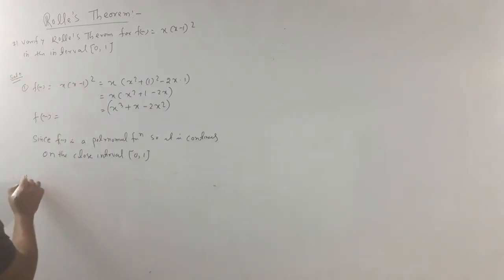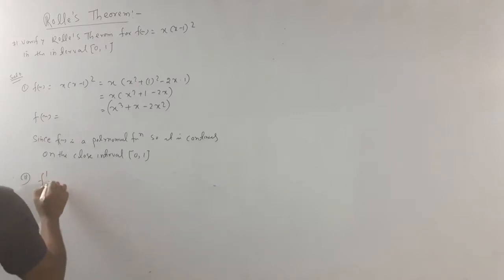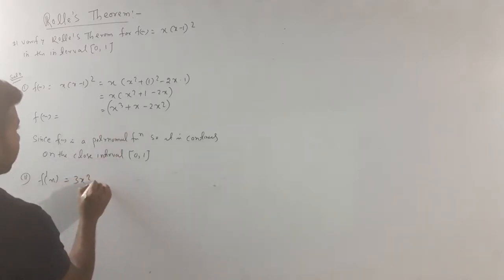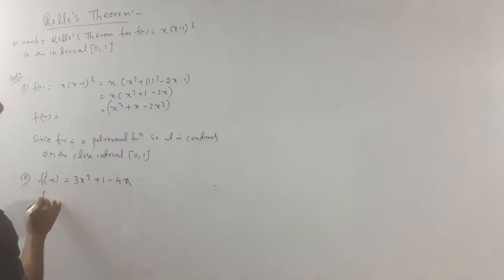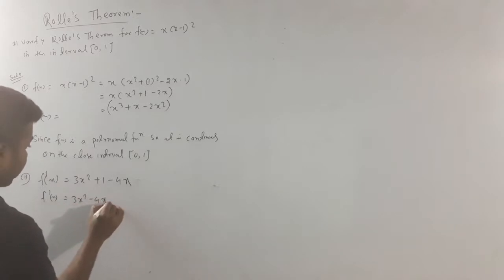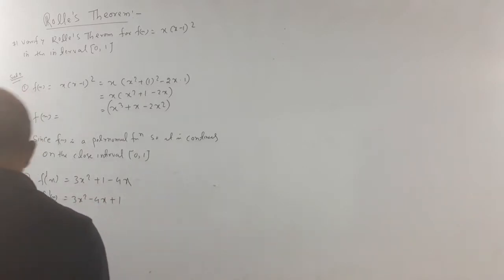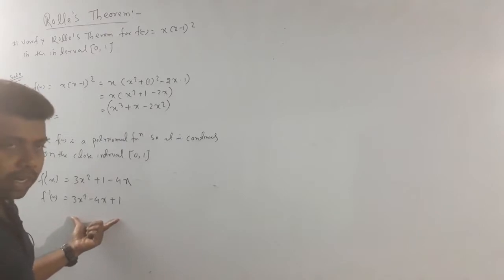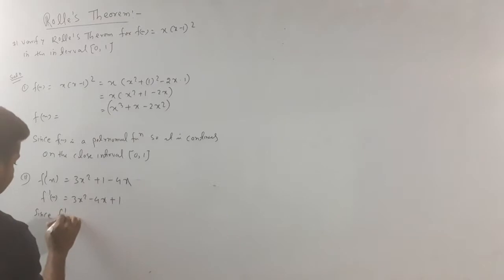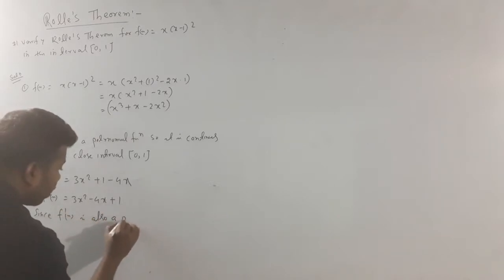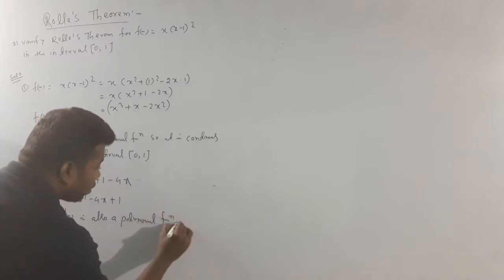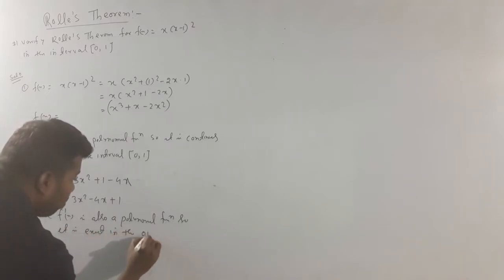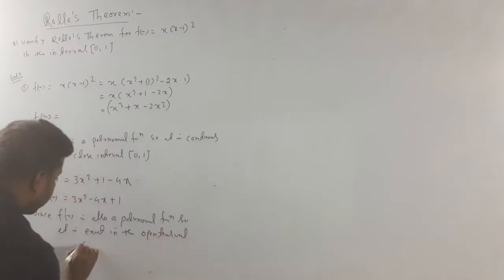Second point: check differentiability. f dash x equals 3x squared plus 1 minus 4x, so f dash x equals 3x squared minus 4x plus 1. Since f dash x is also a polynomial function, it exists — that is, f of x is differentiable — in the open interval (0, 1).